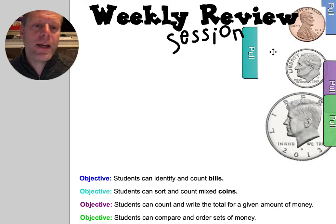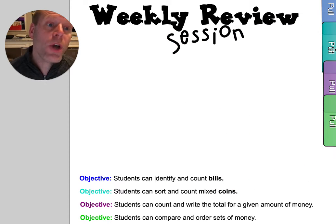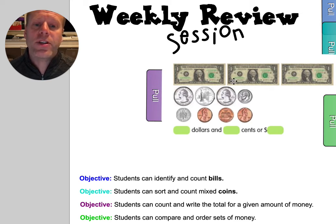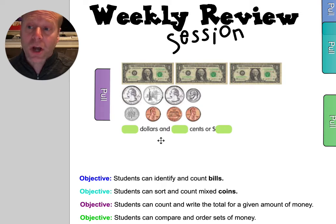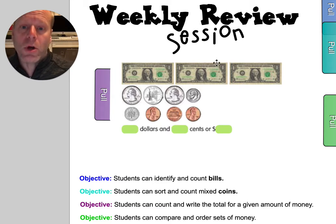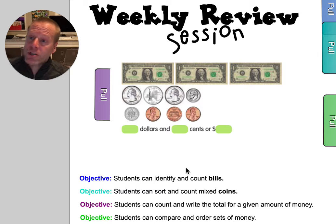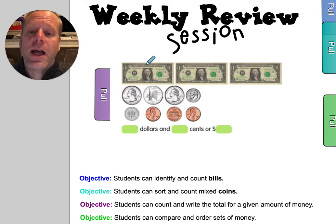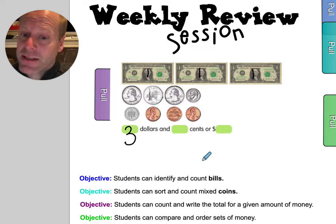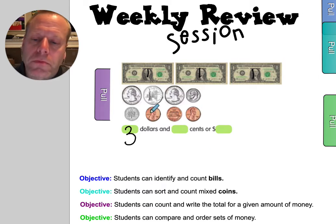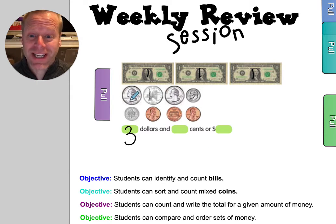Then we moved on to counting up a total. Imagine they give us some bills and some coins — we're going to count those and then show them using dollars and cents. I always start with the big stuff first. So when I do this, I know I have one, two, three dollars. So I'm going to go to the cents now. Remember how I said we were going to sing this?